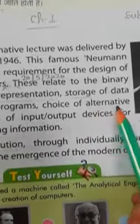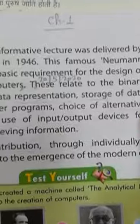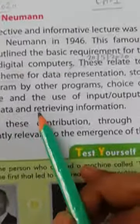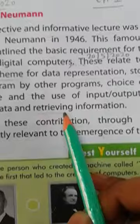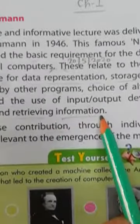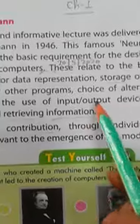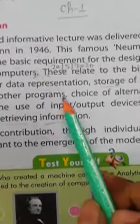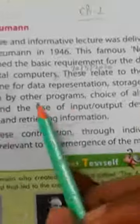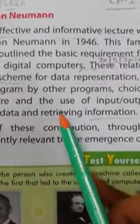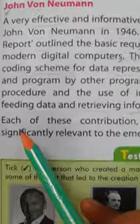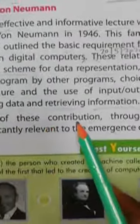Choice of alternative procedure — alternative means Vikalp — and the use of input-output devices for feeding data and retrieving information — retrieving means Praaptkarna, information means Jankari. Input या output device के द्वारा data की पसंद और जानकारी प्राप्त करने से संबंधित है.